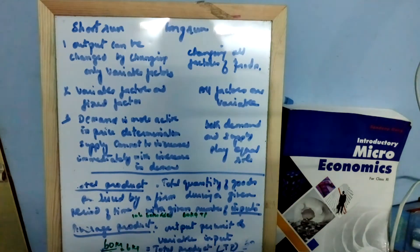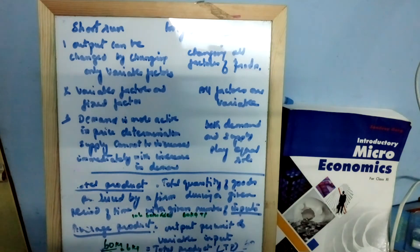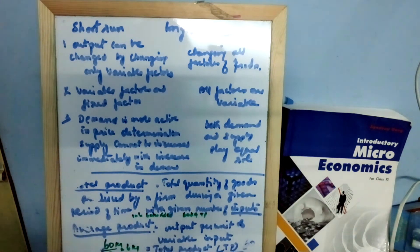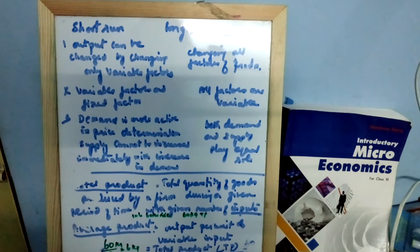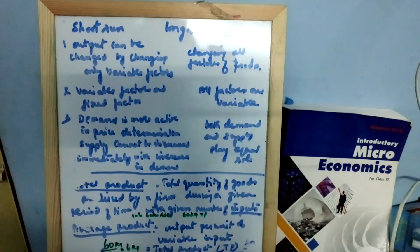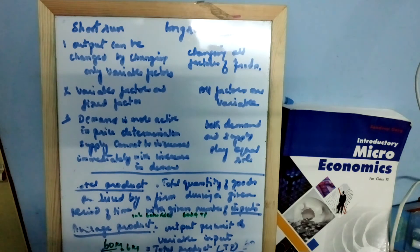Now what is average product? It is output per unit of variable input, which means total product divided by units of variable factors. So here total product is 60 kg of rice and the variable factor is 10 laborers. So 60 divided by 10 equals 6 kg — so 6 kg is the average product.